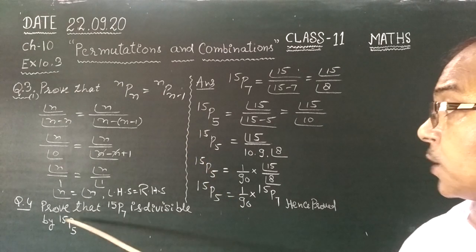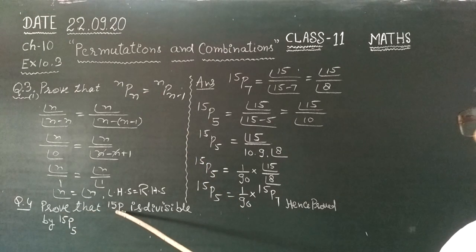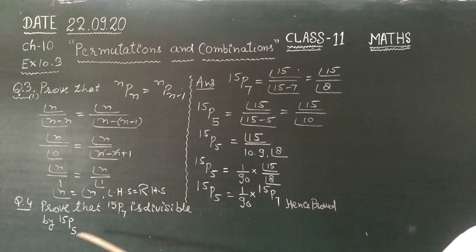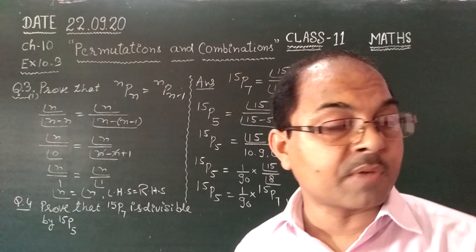Now question number 4: Prove that 15P7 is divisible by 15P5. 15P7, 15P5 se divisible hai.